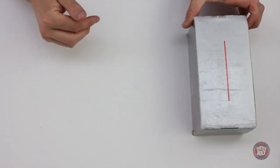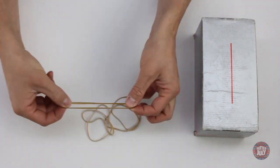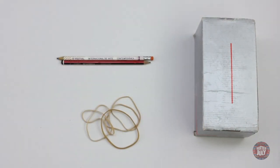Let's start simple with an instrument you can make in a minute. Find a small cardboard box, some rubber bands and a couple of pencils.